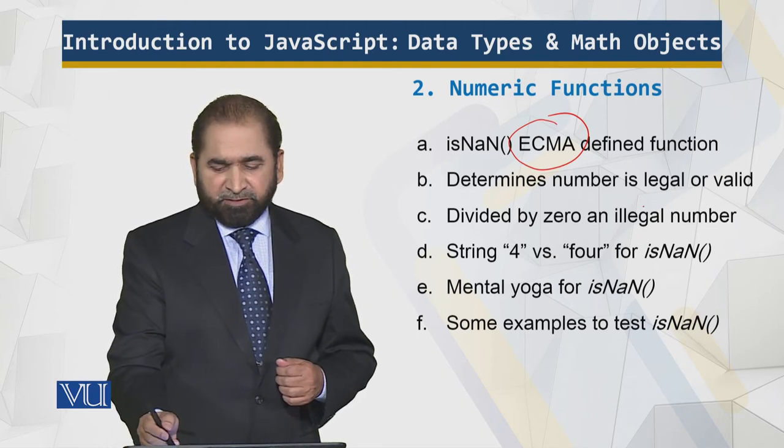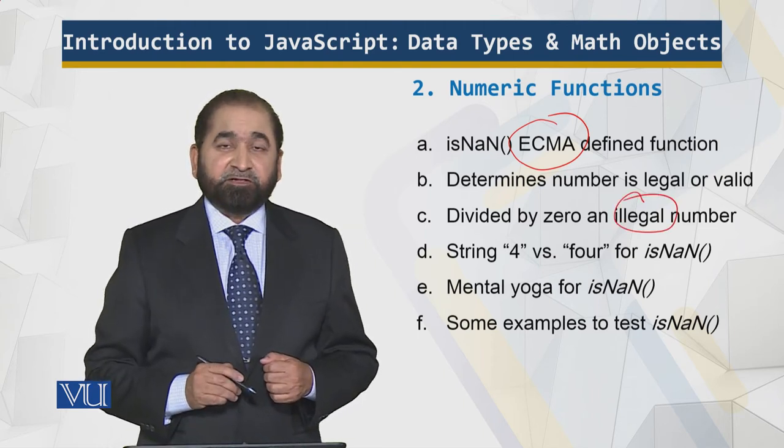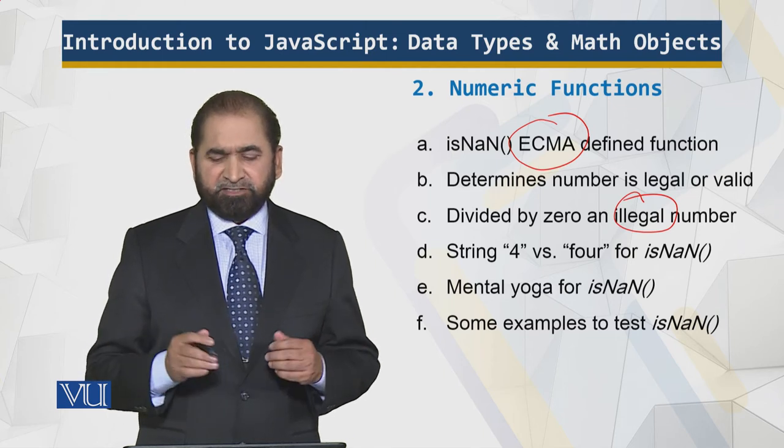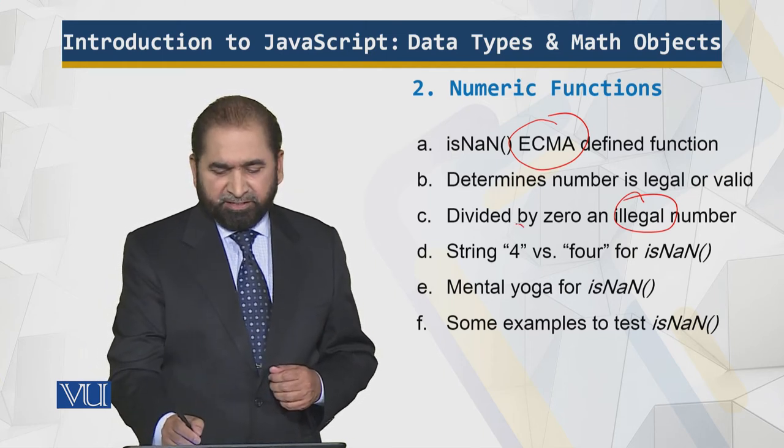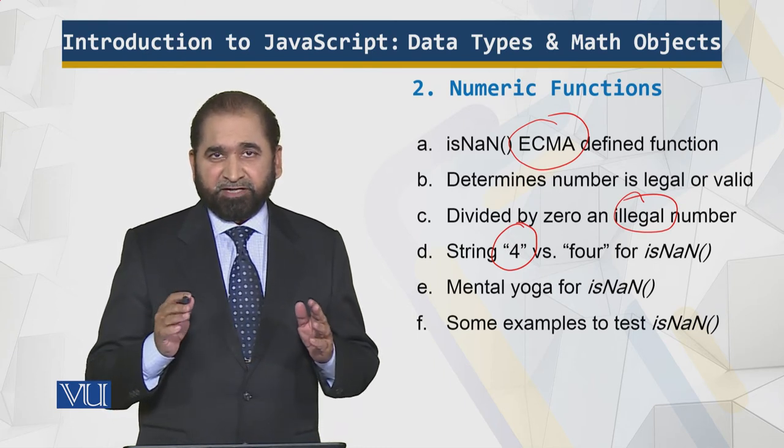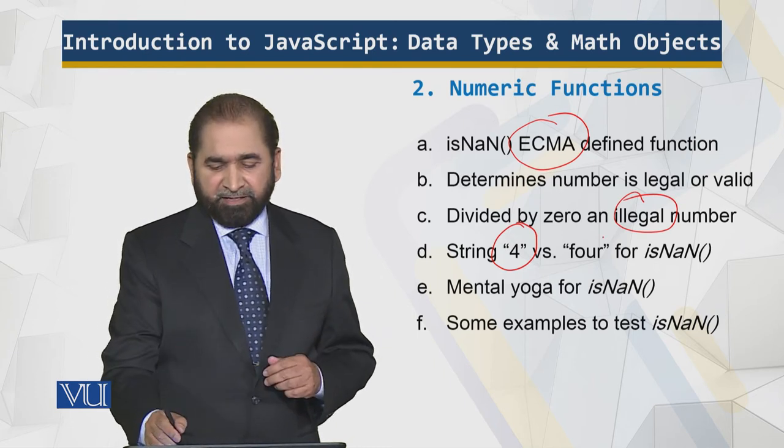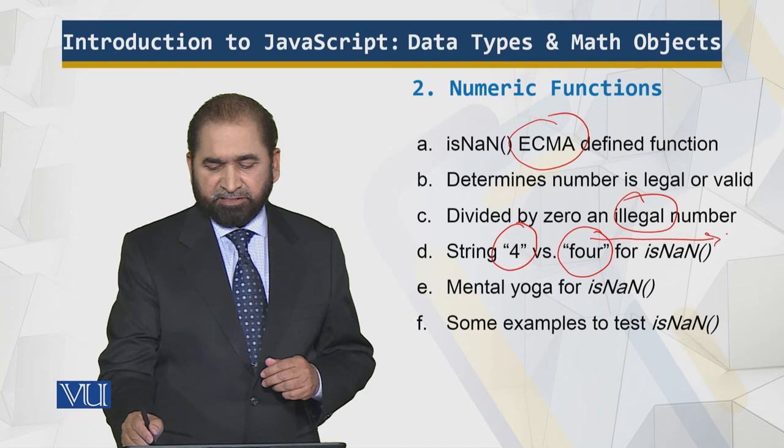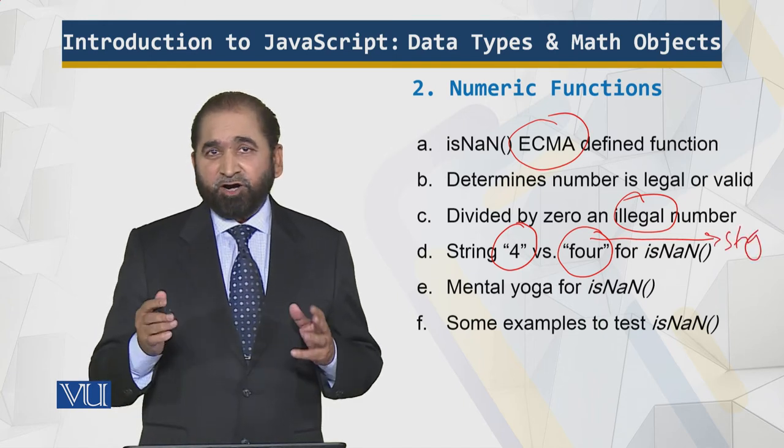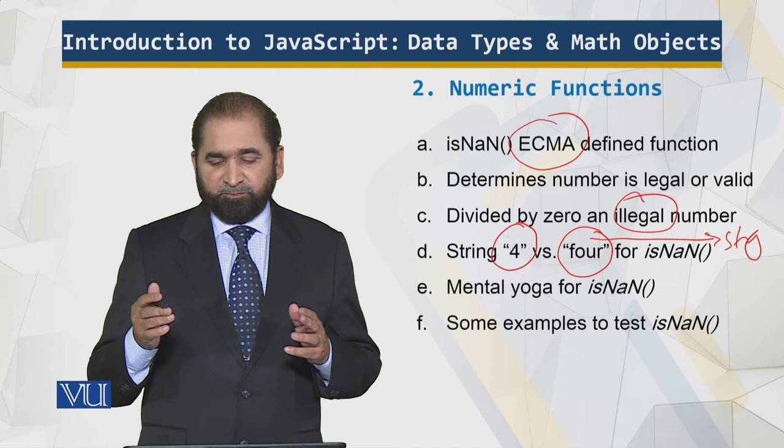So divide by zero is an illegal number. Everybody knows that is undefined. That is very simple. But over here when we have this string within double quotes, we have this numeral four and we have this string over here within the double quotes.